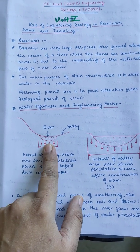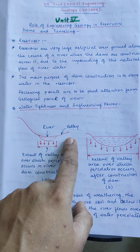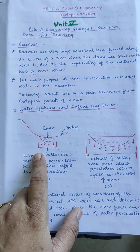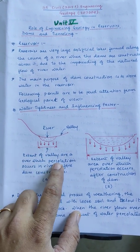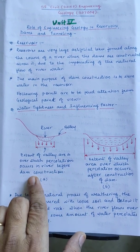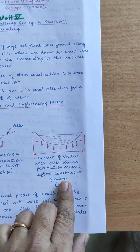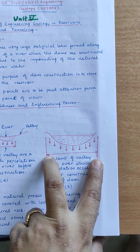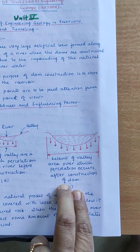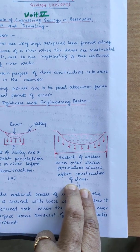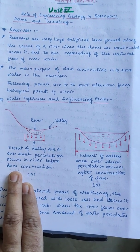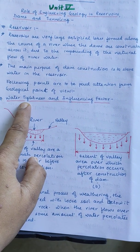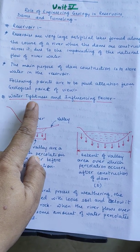When we observe Figure A, here it is a valley where at the bottom there is a river. The extent marked here represents the percolation of water before construction of the dam. In Figure B, after dam construction, the extent has increased. This is because the dam has been constructed. Before construction the extent was small, and after construction the extent is large — so we need to pay attention to water tightness.